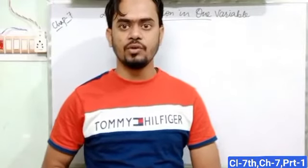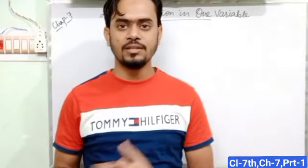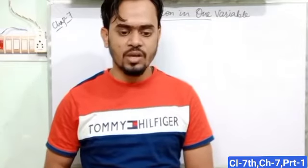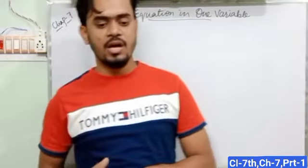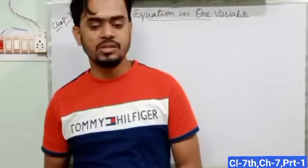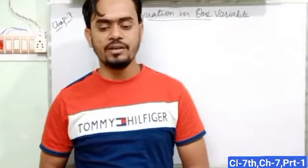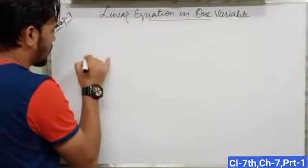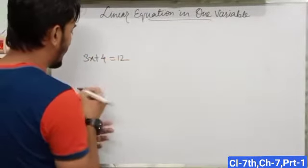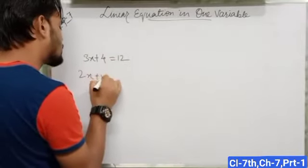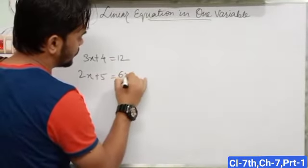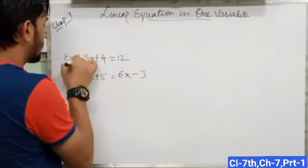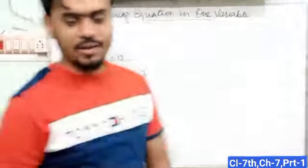I am Adman, presenting your online classes for Class 7, Chapter 7: Linear Equations in One Variable. An equation having linear polynomials only is called a linear equation. For example, 3x + 4 = 12, and 2x + 5 = 6x − 3. These are examples of linear equations.